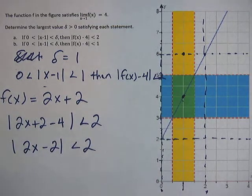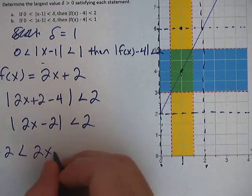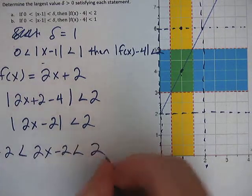How do we solve that for x? Well, like this, we put negative 2 less than 2x minus 2 less than positive 2.